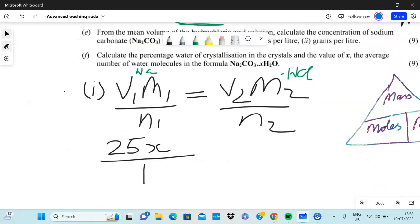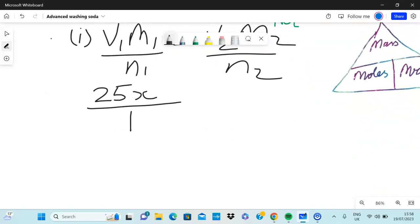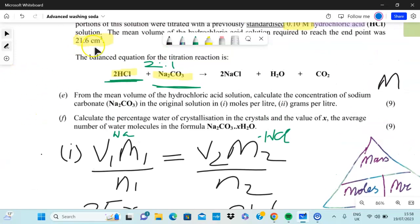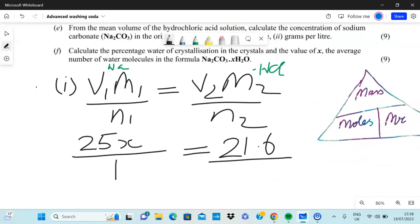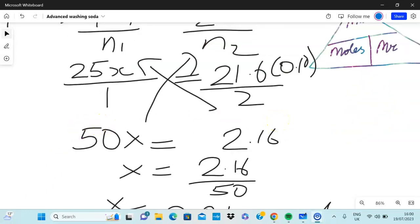Next one is 21.6 - that's of HCl, so that's the amount that was needed to reach the endpoint. And 0.10, that's the concentration, the big M, and two. What do you do? Cross multiply. So do this, do this. When you do that, don't just put it in a calculator. Make sure you write your steps. If you have any slips you won't lose any marks. So that's 50X equals 2.16.